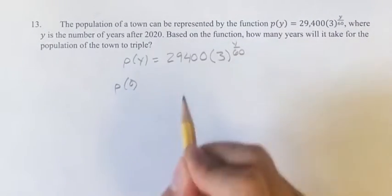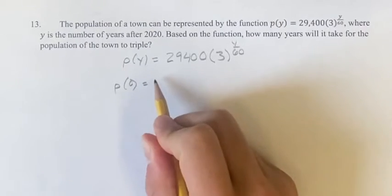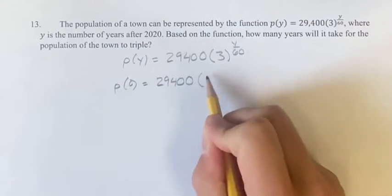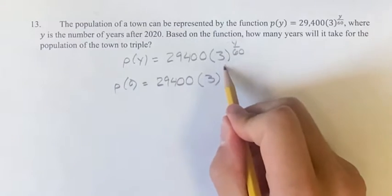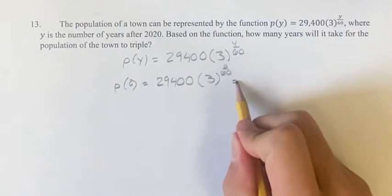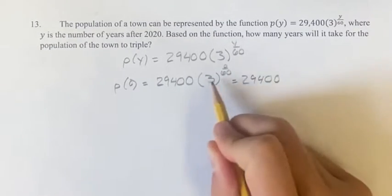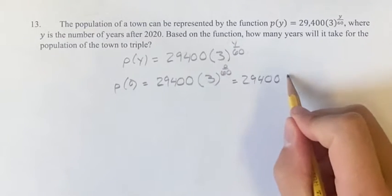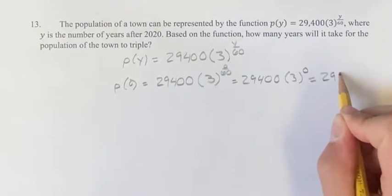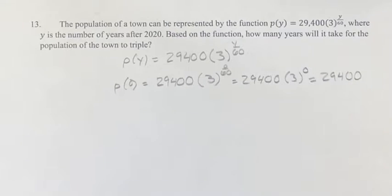So p(0), the 0 is usually a good place to start, is 29,400 times 3 to the 0/60, which equals 29,400 times 3 to the 0 since 0 divided by 60 is 0, which equals 29,400 times 1, which is just itself.